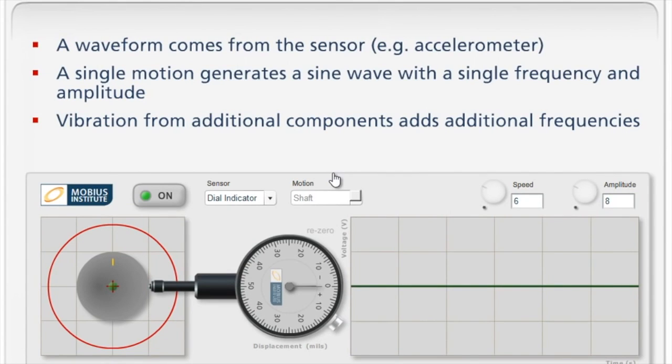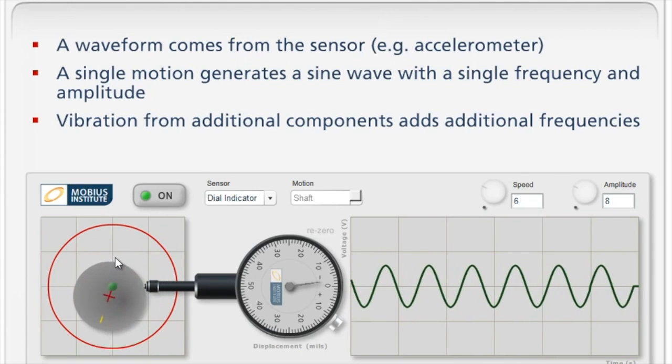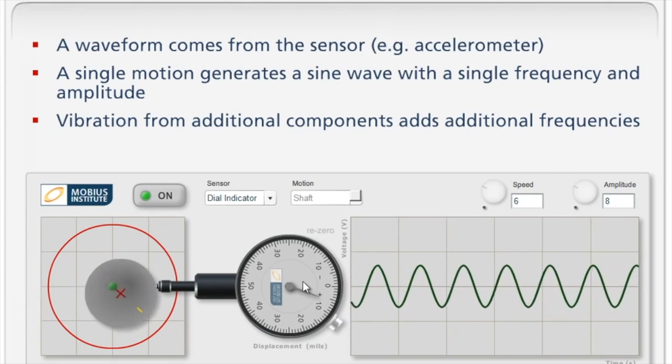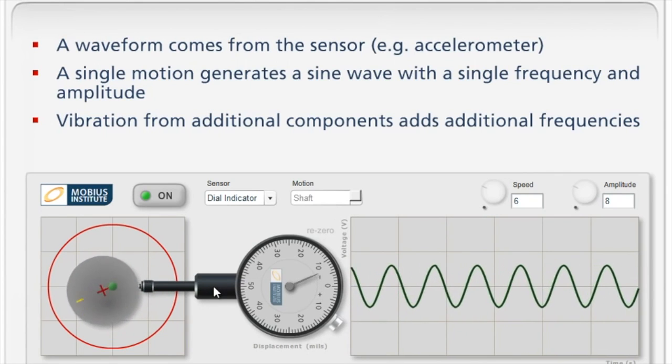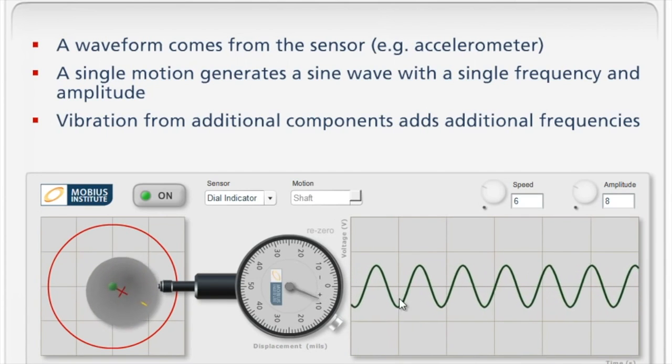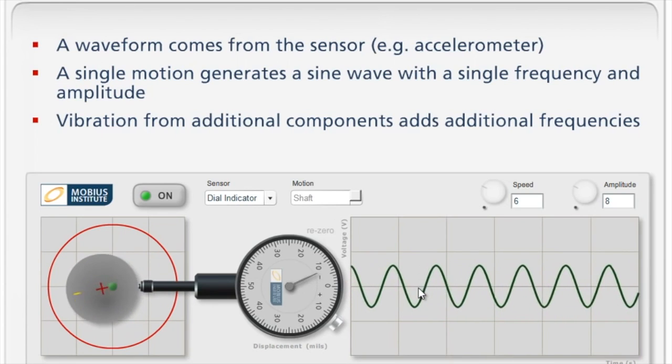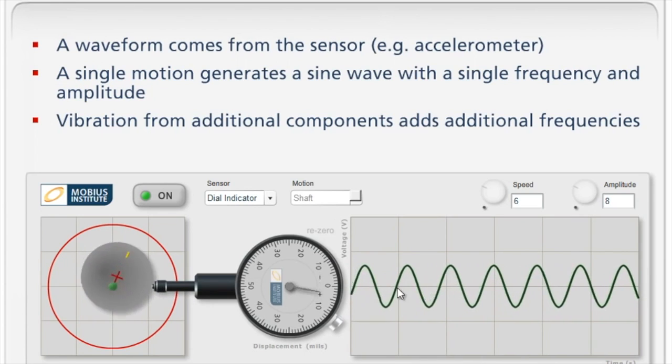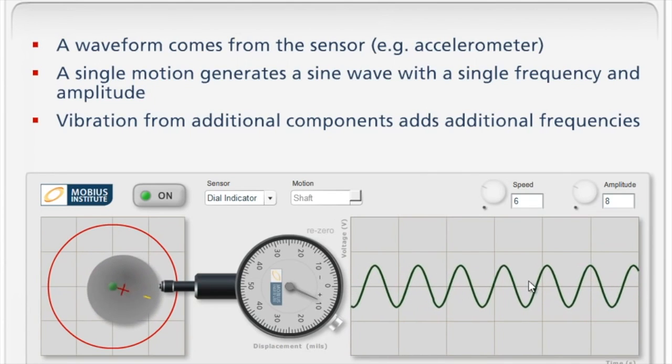Our sensor is sensing the motion in this particular case on the bearing itself. Imagine if this was the shaft inside the machine, and I exaggerate some of the motion. There's the shaft moving around in that circular motion, perhaps because of unbalance or a bent shaft. For simplicity's sake, we've put a dial indicator on the shaft. As the shaft moves back and forward, it pushes the plunger in and out. We see the needle move and we get this pattern. That pattern is a sine wave, a pure sine wave with a single frequency and a single amplitude.